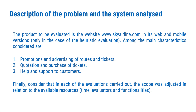Description of the problem and system analysis. The product to be evaluated is the website Skyline.com in its web and mobile version. Among the main characteristics considered are: promotion and advertising of routes and tickets, and helps and support to consumers. In each of the evaluations carried out, the scope was adjusted in relation to available resources.